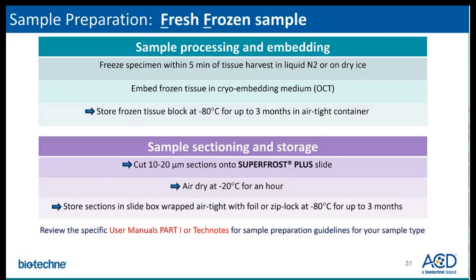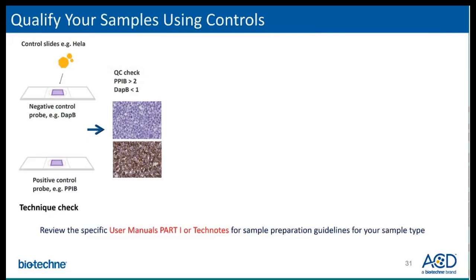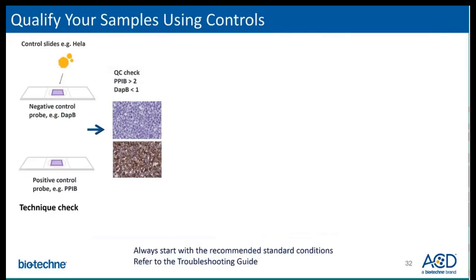For fresh frozen samples, please review the user manual for detailed recommendations. We recommend storing frozen tissue blocks or sections airtight at minus 80°C for up to 3 months. The recommended sample thickness is 10 to 20 microns, again mounted on SuperFrost Plus slides.